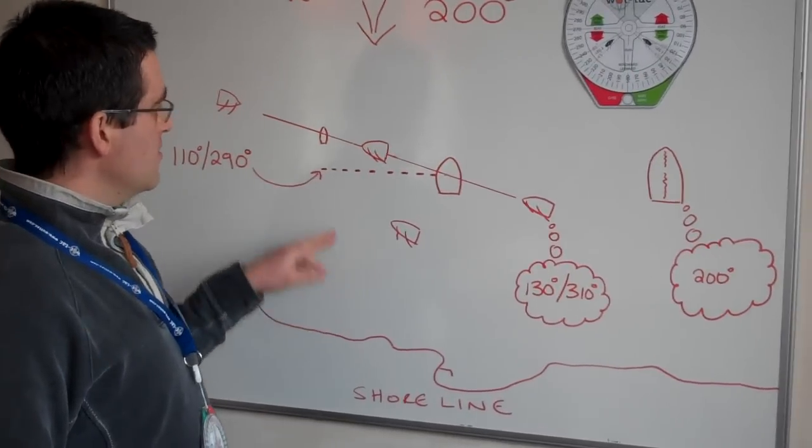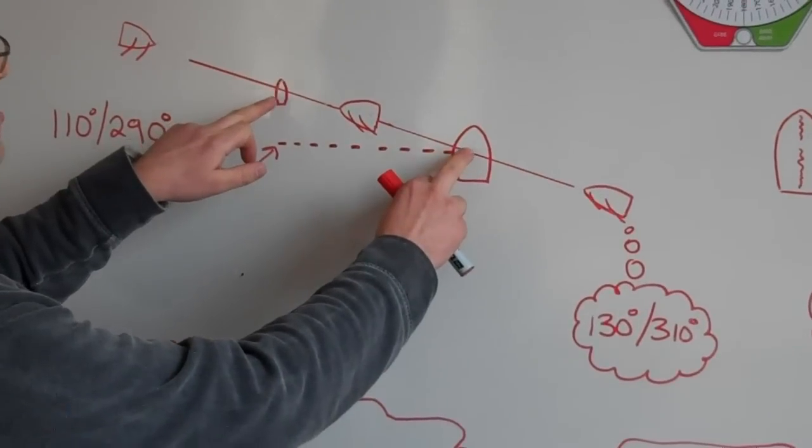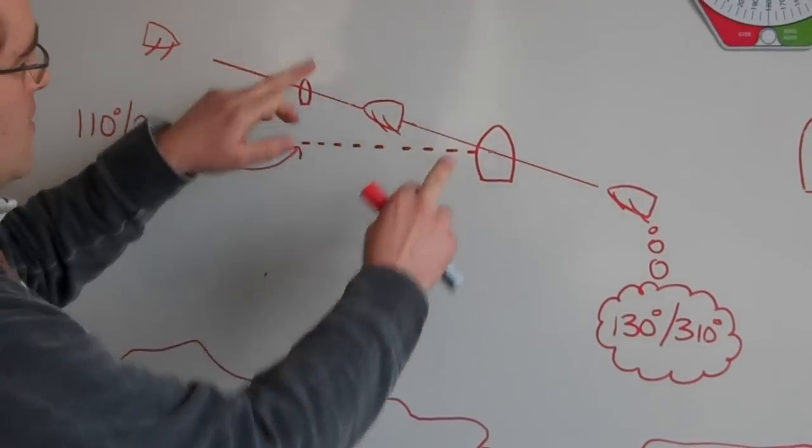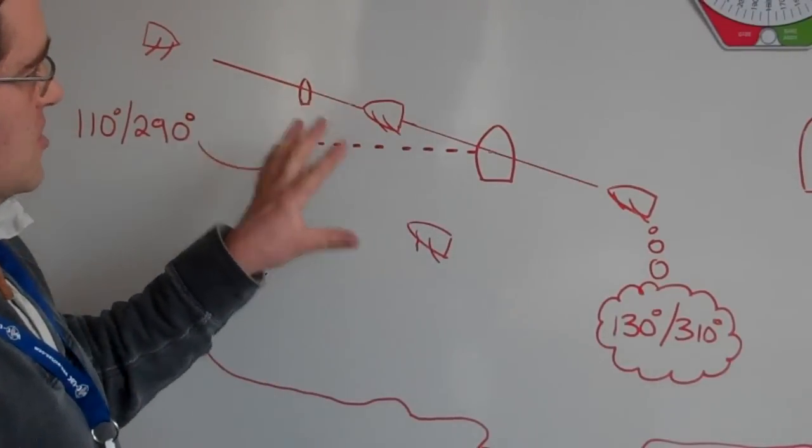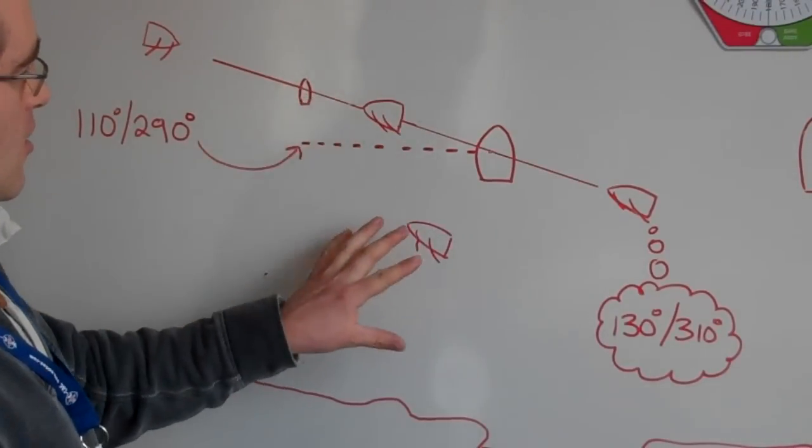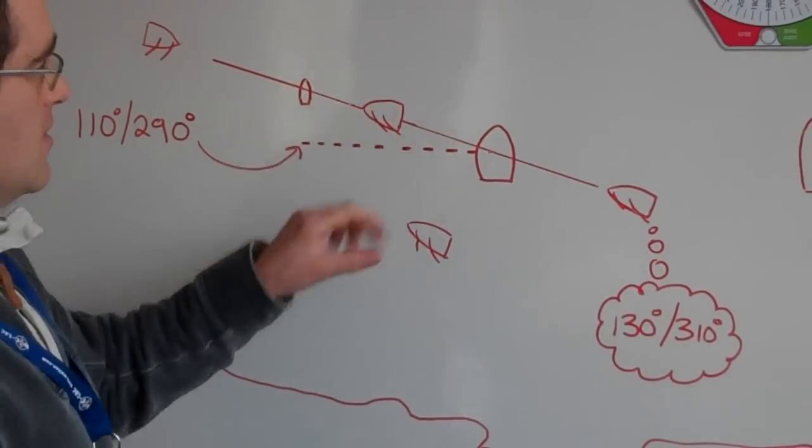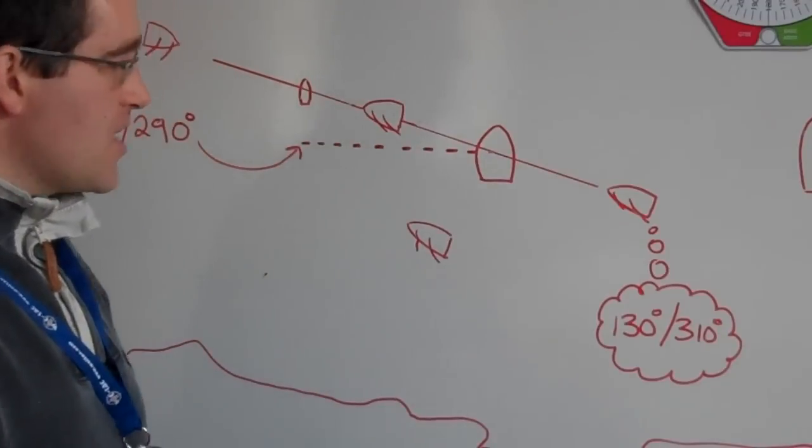If there's not much bias in the line - what I mean by bias is one end is closer to the wind than the other. The line bias is very hard to see just by looking from your boat at the line. That's where the Wattac can help us.